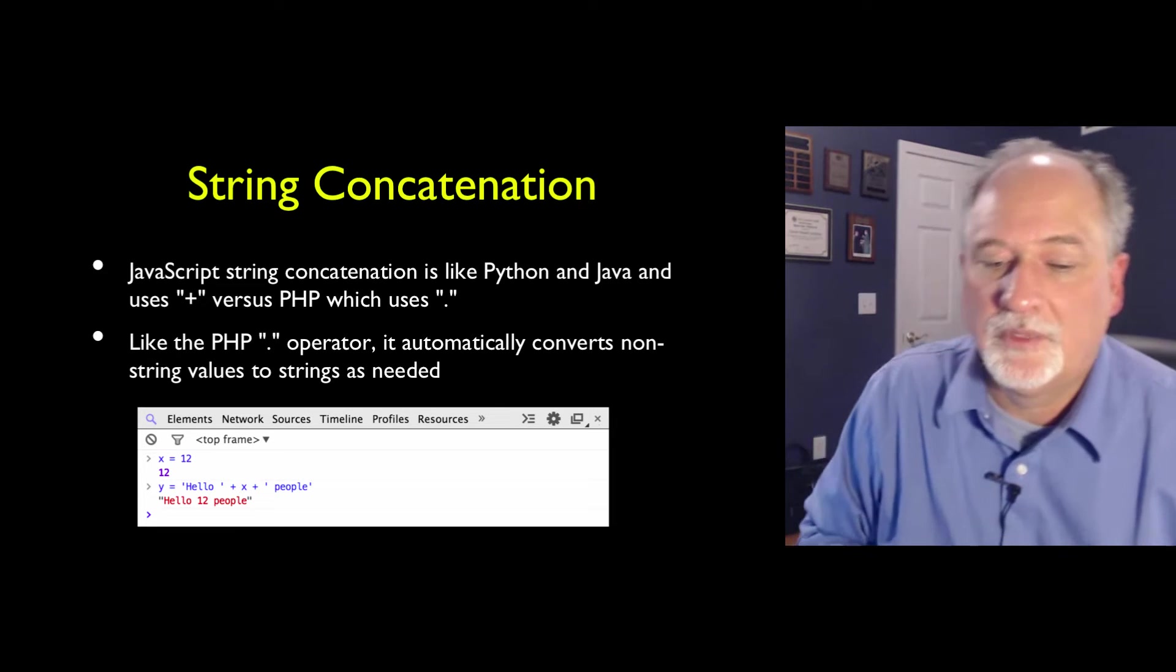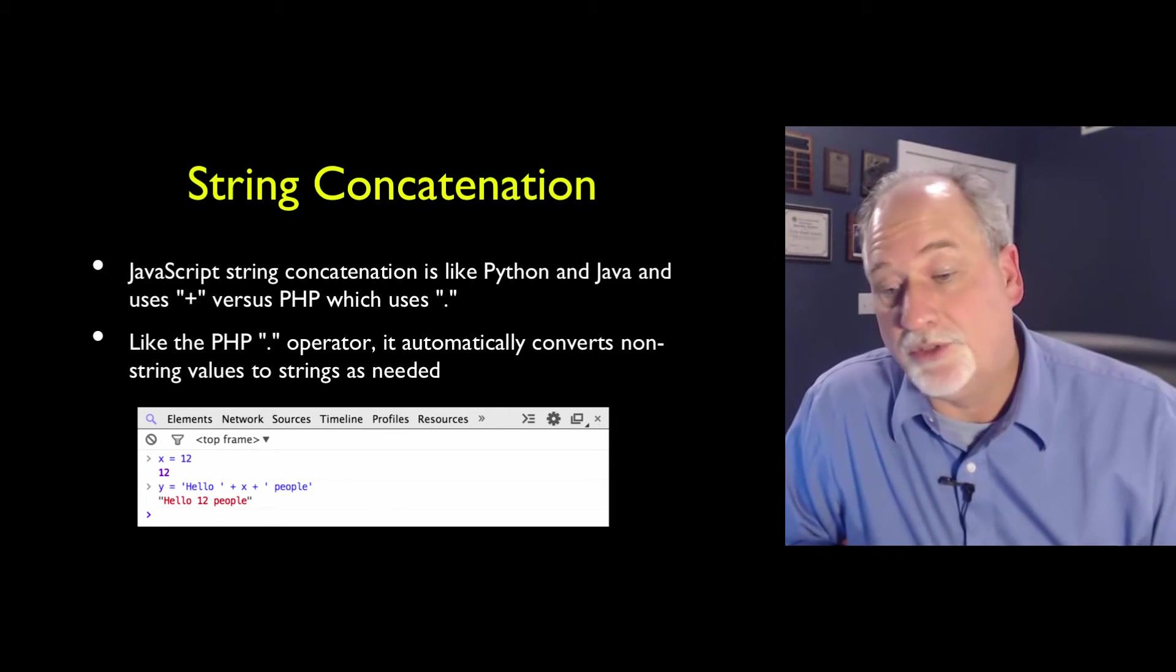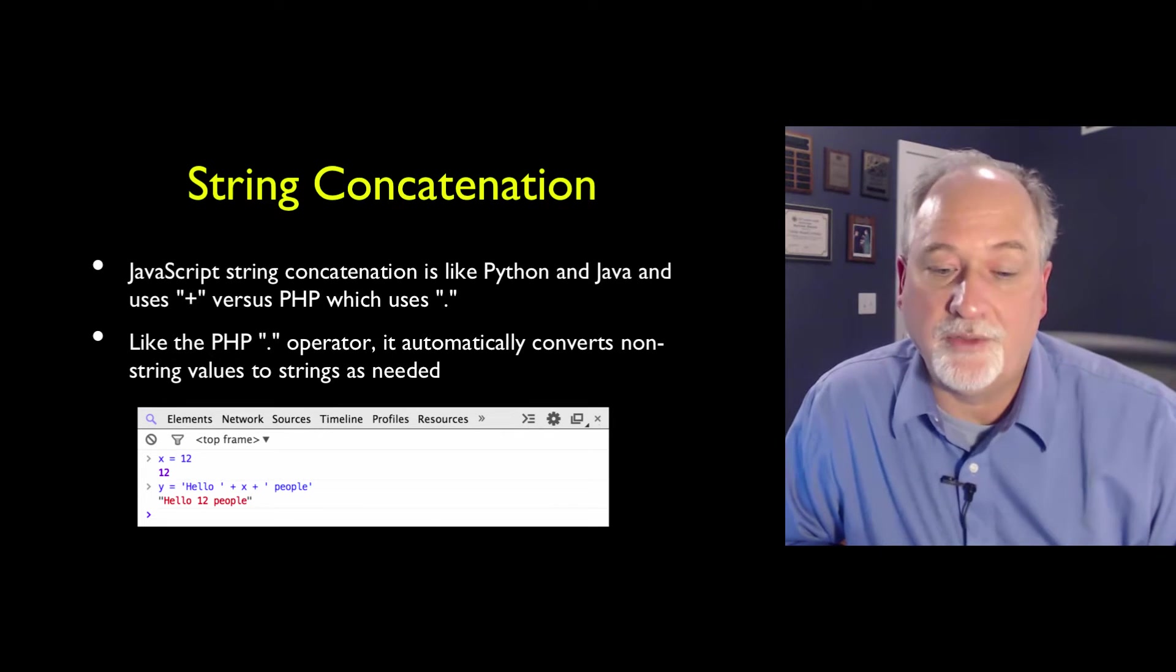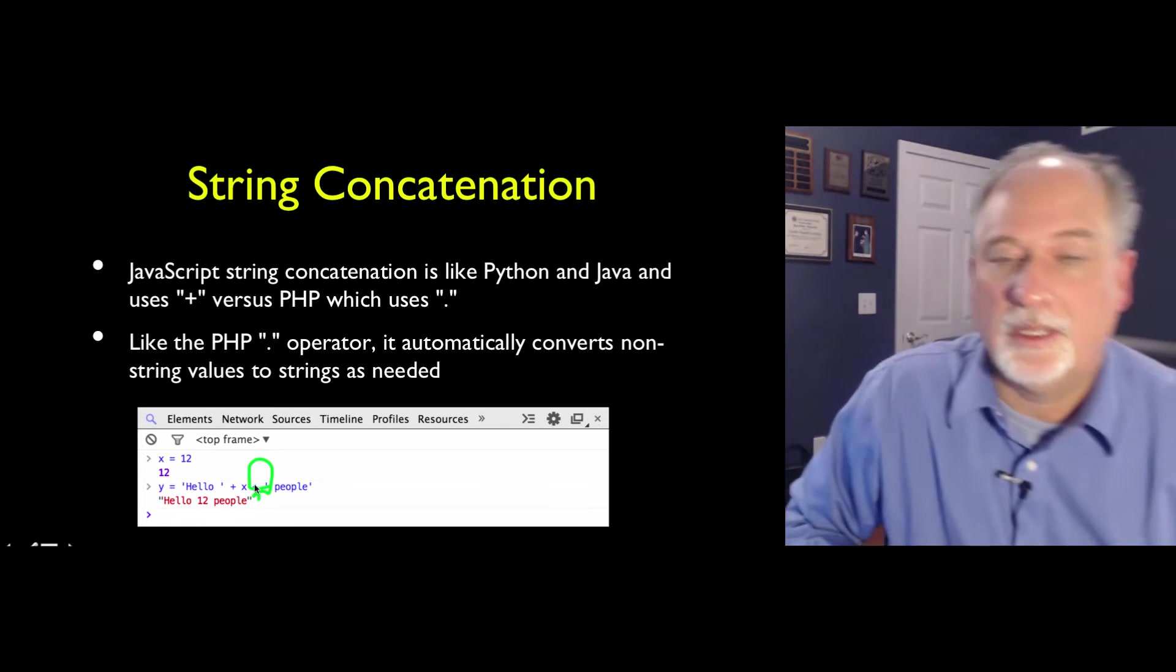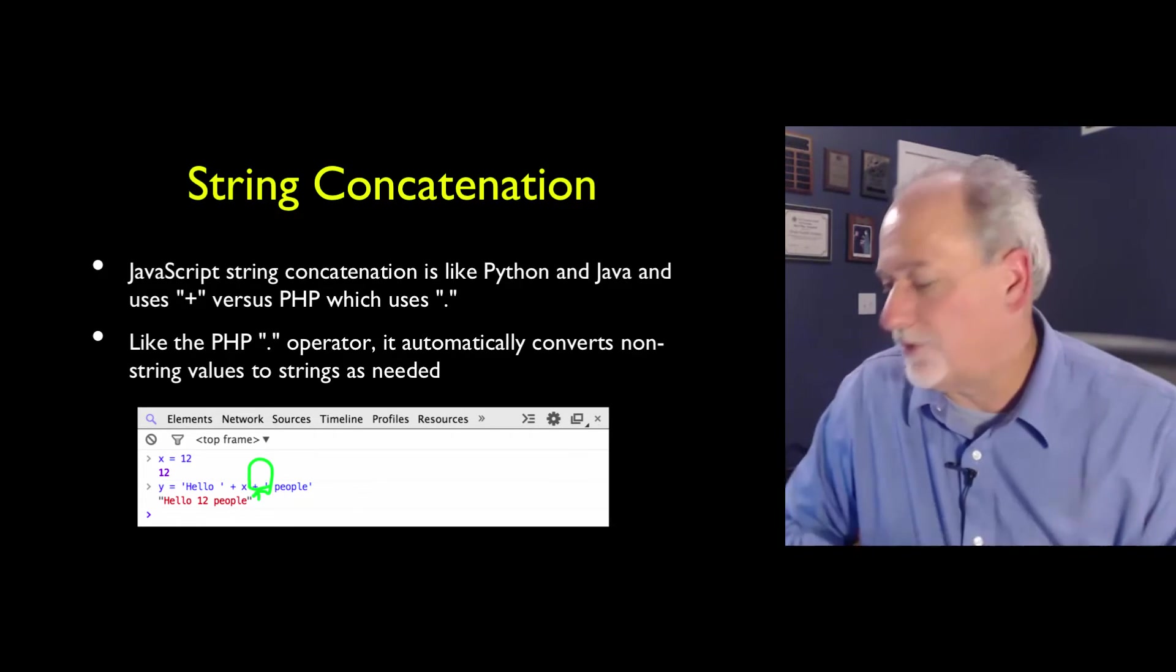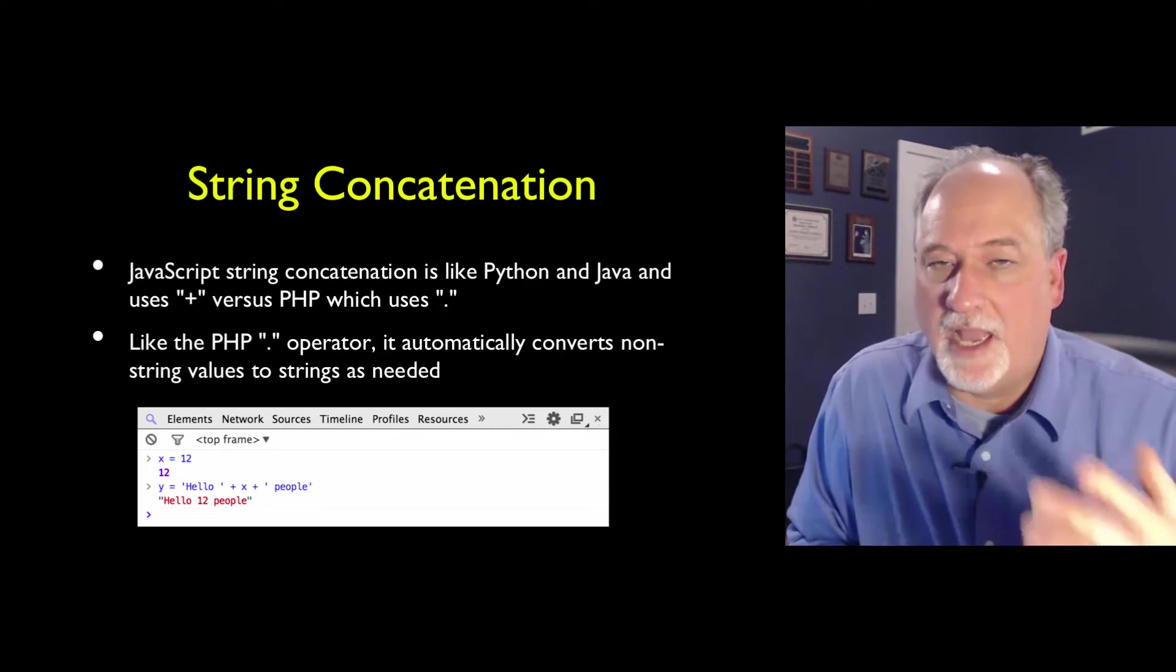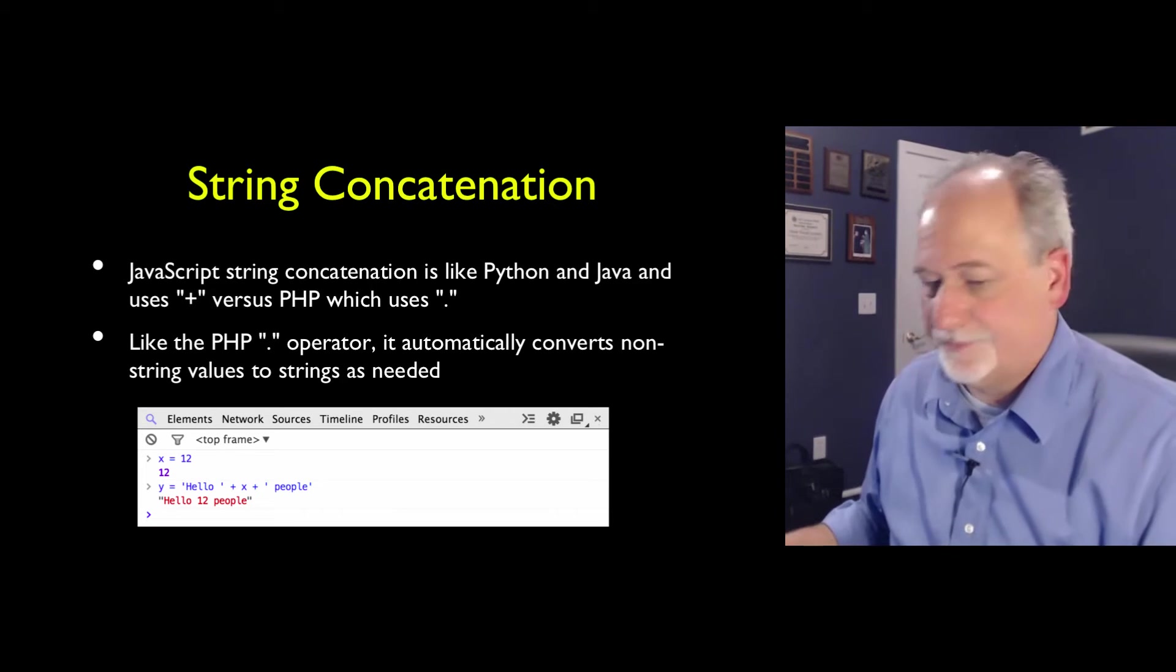String concatenation. This is probably the part when I switch from one language to another that drives me nuts. I like how PHP uses the dot, but JavaScript uses the Java and other languages, more common syntax of plus for concatenation. And it does do aggressive type conversion where needed. There's no like string function or anything like that that you might use in Python. You concatenate a string and an integer and it'll turn that integer to a string for you and it concatenates.